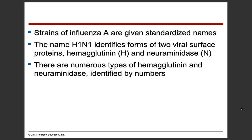Strains of influenza A are given standardized names. The name H1N1 identifies the forms of two viral surface proteins: hemagglutinin, which is H, and neuraminidase, which is N. There are numerous types of hemagglutinin and neuraminidase identified by different numbers — that's where the numbers after H and N come from. They're the proteins that are actually on the surface of this particular virus.